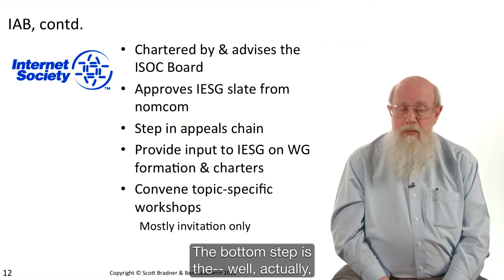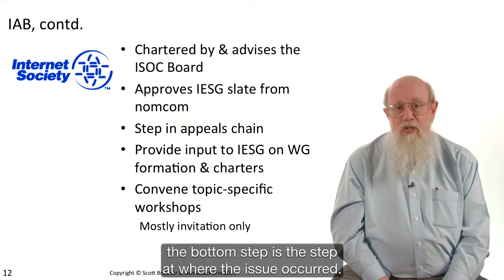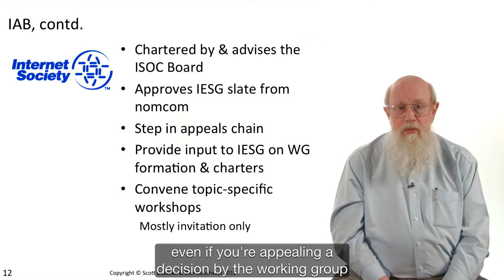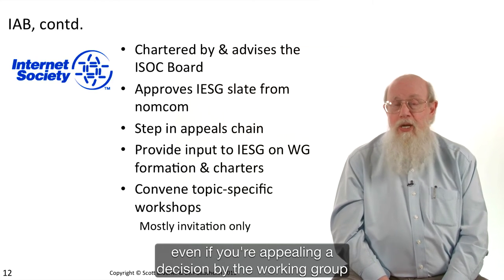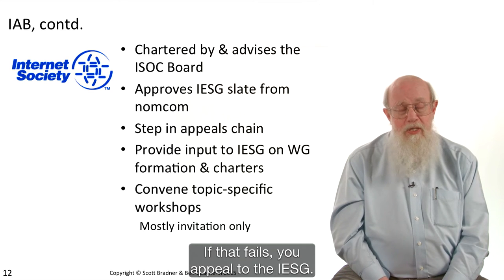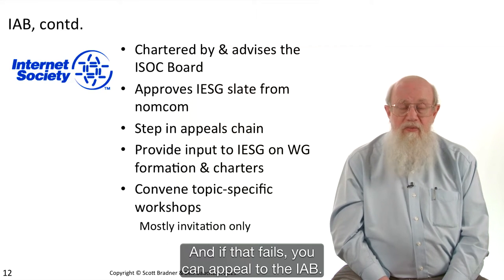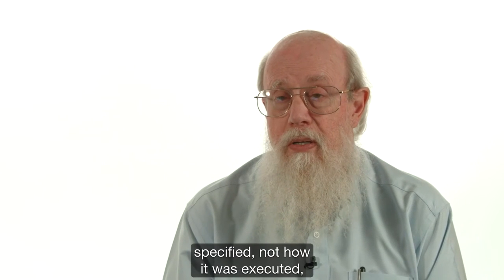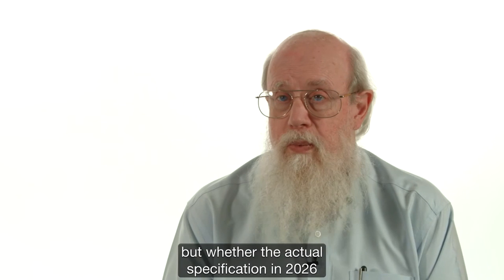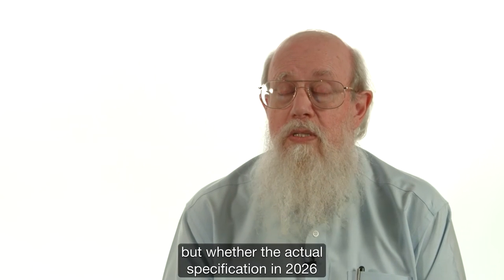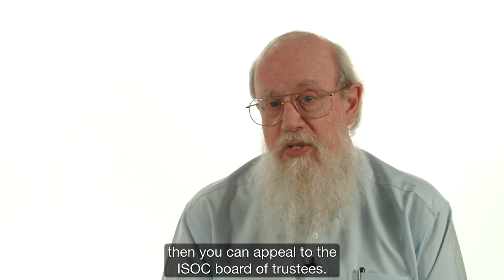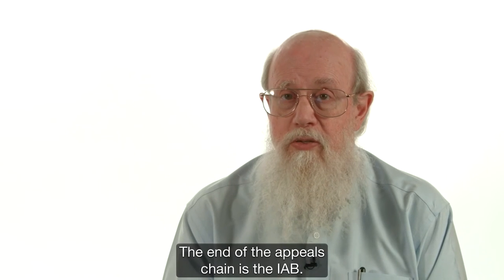The IAB is a mid-step in the appeals chain. If you have a problem in the working group, you appeal to the working group chair. If that fails, you appeal to the IESG. If that fails, you can appeal to the IAB. And if you think the standards process itself is incorrectly specified — not how it was executed, but whether the actual specification in RFC 2026 is proper — then you can appeal to the ISOC Board of Trustees. Otherwise, the end of the appeal chain is the IAB.